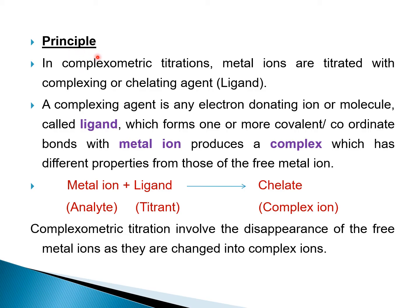The principle behind complexometric titration: the metal ions are titrated with complexing or chelating agents, also called ligands. A complexing agent is any electron-donating ion or molecule called a ligand, which forms one or more covalent or coordinate bonds with the metal ions, producing a complex with different properties from those of the free metal ion. The metal ion complexes with the ligand titrant at the endpoint.